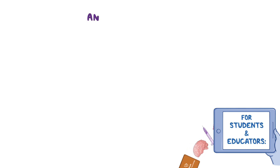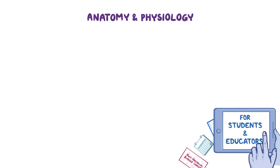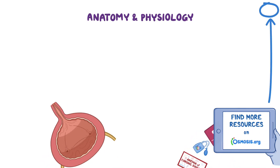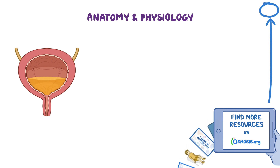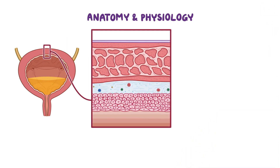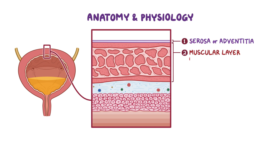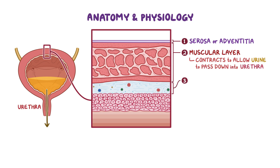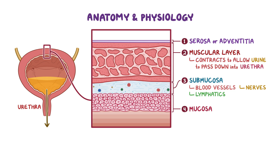The urinary bladder is a hollow visceral organ that serves as a reservoir for holding urine. The wall of the urinary bladder is made up of four layers: the outermost layer called the serosa or adventitia; the muscular layer, which contracts to allow urine to pass into the urethra; the submucosa, a dense layer containing blood vessels, lymphatics, and nerves; and finally the innermost mucosa, consisting of specialized urothelial cells.